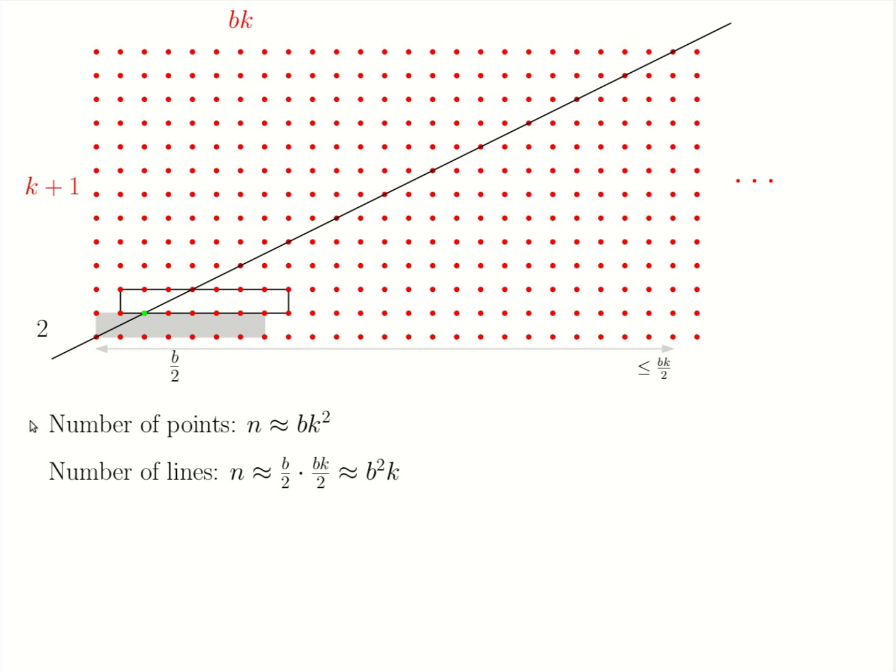Next, we need to count the number of points and the number of lines that we have created. The number of points is easy to estimate. It's roughly b times k squared, or asymptotically it's b times k squared.